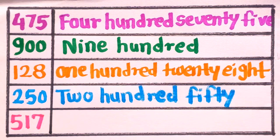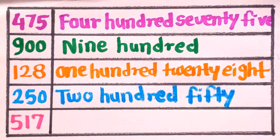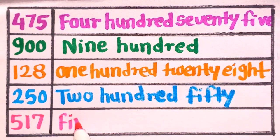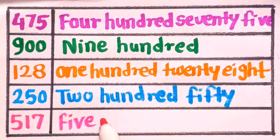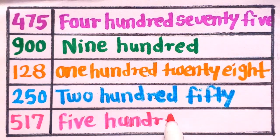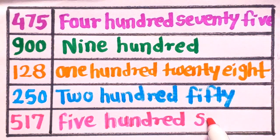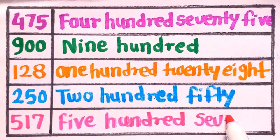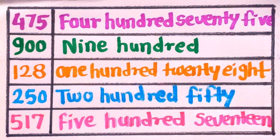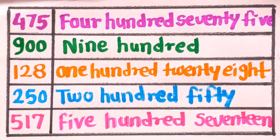And next number is 517. 517 is five hundred seventeen. F-I-V-E H-U-N-D-R-E-D, S-E-V-E-N-T-E-E-N. Let's revise.